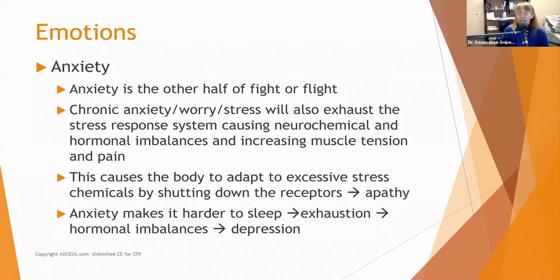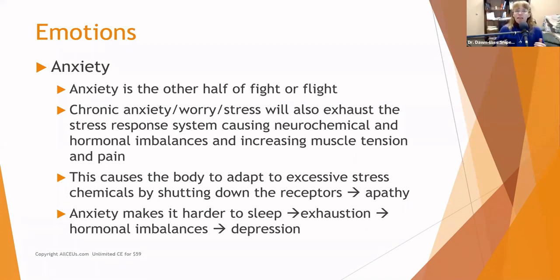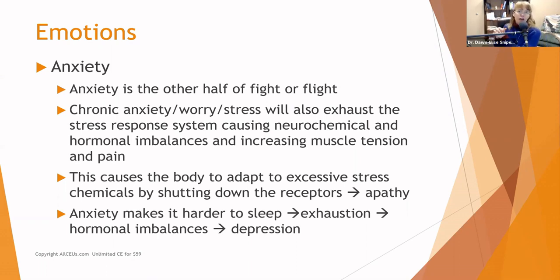Anxiety is the other half of fight-or-flight. Chronic anxiety, worry, or just good old-fashioned stress will exhaust the stress response system, causing neurochemical and hormonal imbalances and increasing muscle tension and pain. When the HPA axis is elevated, the body says now is not the time to reproduce, altering sex hormones — which can contribute to depression. Under chronic anxiety, the body adapts by shutting down cortisol receptors, causing glucocorticoid resistance or hypocortisolism. Anxiety also makes it harder to sleep, contributing to exhaustion, hormonal imbalances, and ultimately depression.